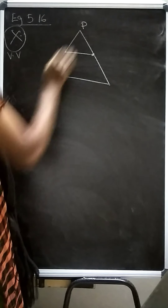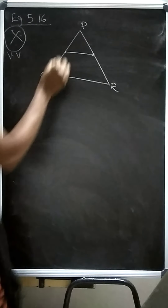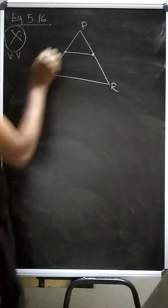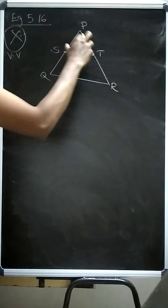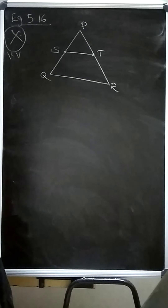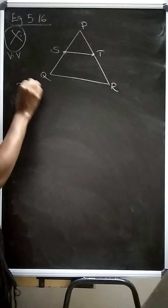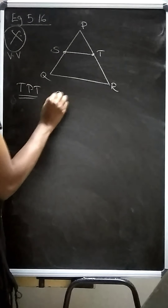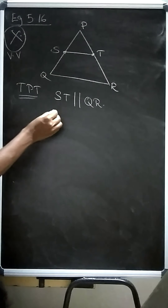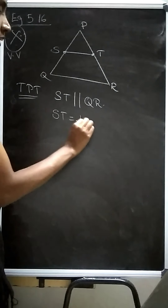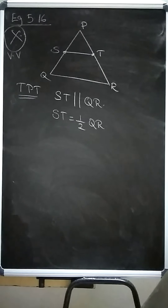So now let us take triangle P, Q, R. S and T are midpoints respectively — S is the midpoint of PQ and T is the midpoint of PR. Now we need to prove: first, that ST is parallel to QR; and second, that the length of ST is equal to half the length of QR.